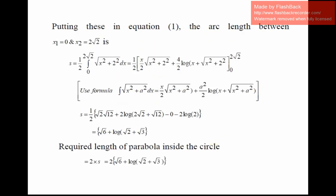Putting this into equation 1 with limits x = 0 to 2√2: s = integral from 0 to 2√2 of √(x² + 4)/2 dx. The factor 1/2 is constant outside. Using the same standard formula with a = 2: s = (1/2)[x/2·√(x² + 4) + (4/2)·log(x + √(x² + 4))] from 0 to 2√2. Replacing x = 2√2 for the upper limit and x = 0 for the lower limit, and applying logarithmic subtraction as a ratio, the final answer is √6 + log(√2 + √3).